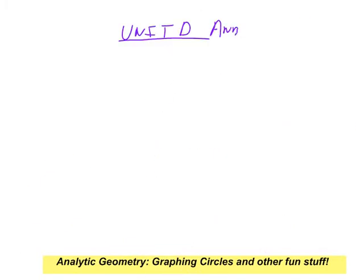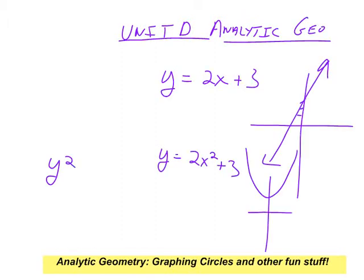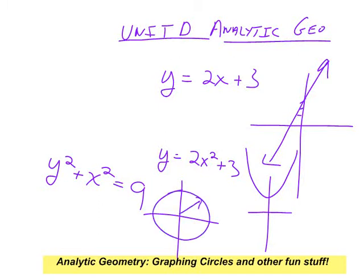In Unit D, analytic geometry, we're going to look at slopes of lines and parallel and perpendicular lines, but more importantly things with squares in them. When you've got just y and x squared in an equation you get a parabola. What happens when you square the y too? You get a circle.